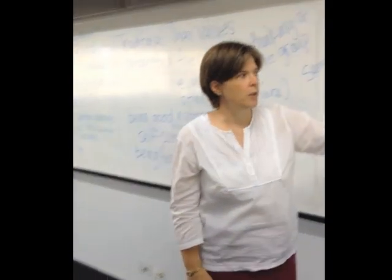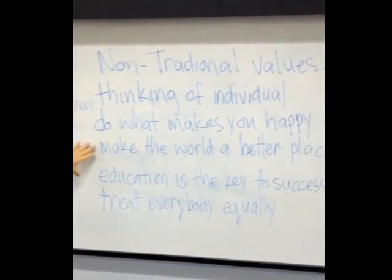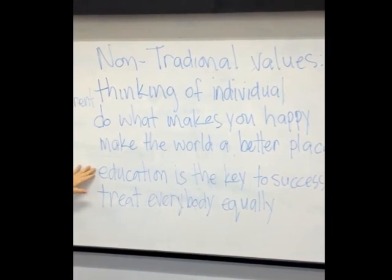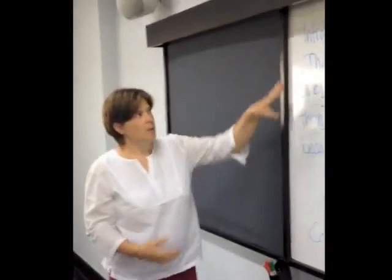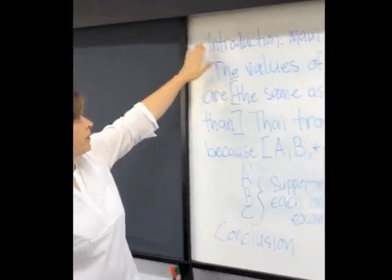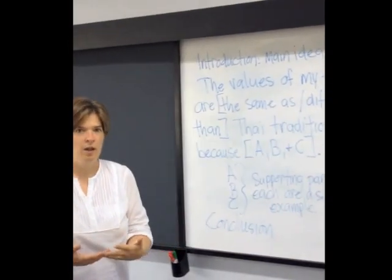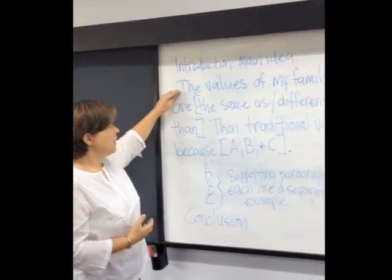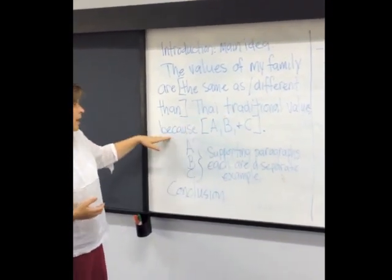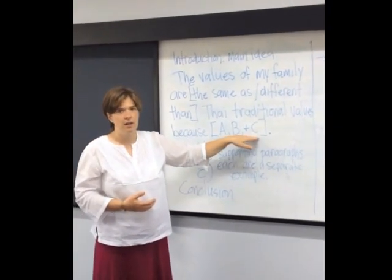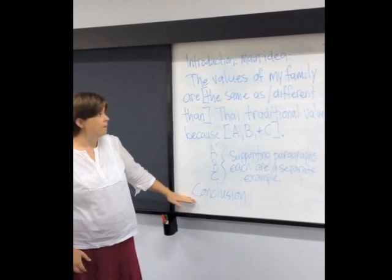I helped them brainstorm some of the more Western ideas, such as thinking of the individual, doing what makes them happy, making the world a better place, education is the key to success, and treating everybody equally. We are also working on being able to write a five-part essay, beginning with the introduction and the main idea. Students identified that the main idea would be: the values of my family are either the same as or different from Thai traditional values because A, B, and C.